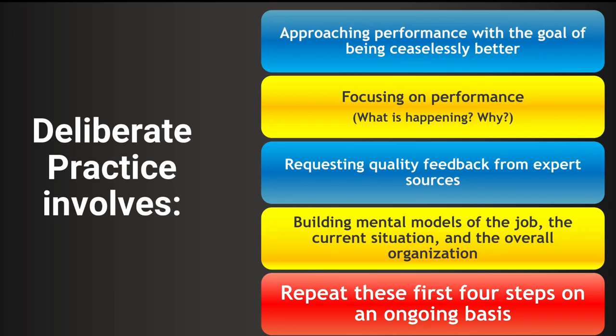Deliberate practice involves certain elements. The steps start with approaching performance with the goal of being ceaselessly better and constantly improving. The second step is focusing on performance — what's happening and why. The third step is requesting quality feedback from expert sources. The fourth step is building mental models of the job, the current situation, and the overall organization. And finally, these four steps are repeated on an ongoing, continuous basis.